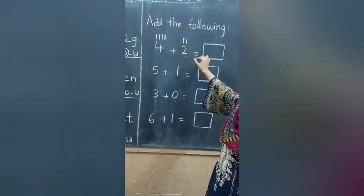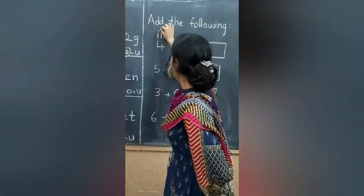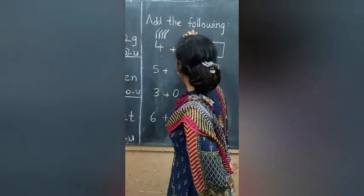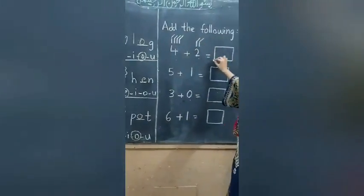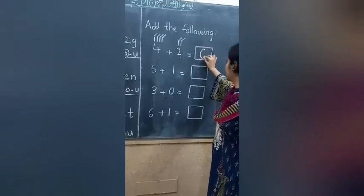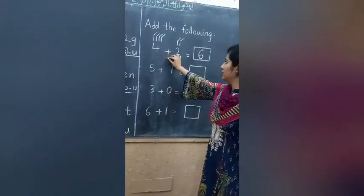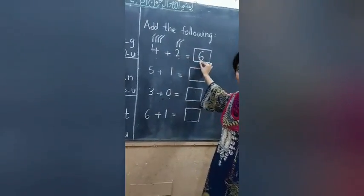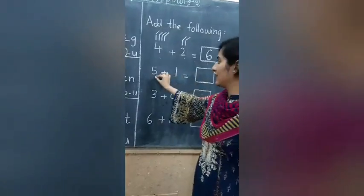Let's count them. 1, 2, 3, 4, 5, 6. Answer is 6. 4 plus 2 is equal to 6.